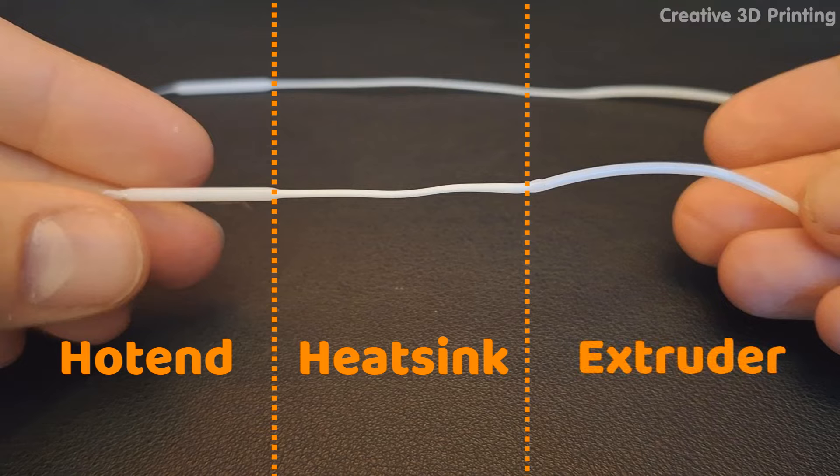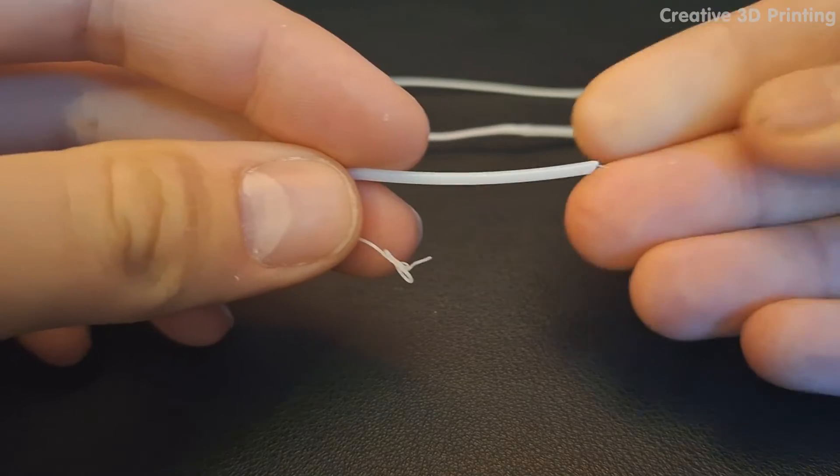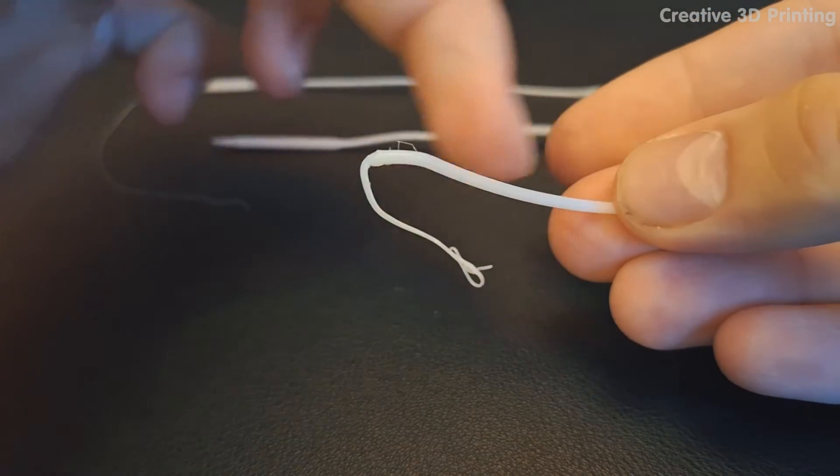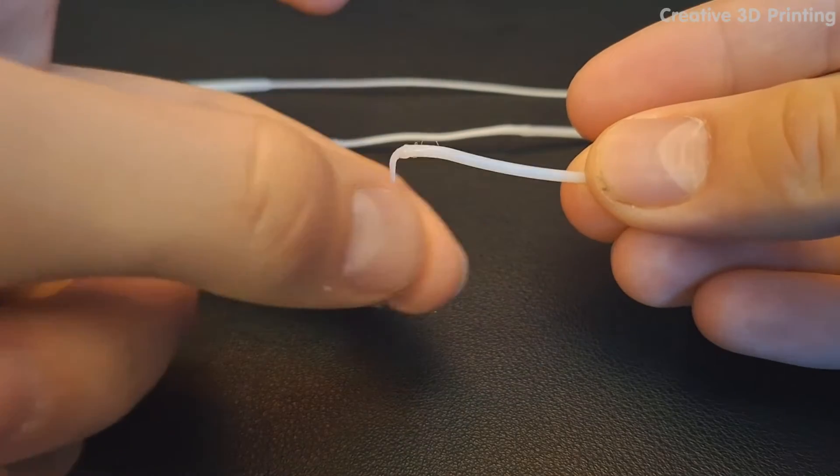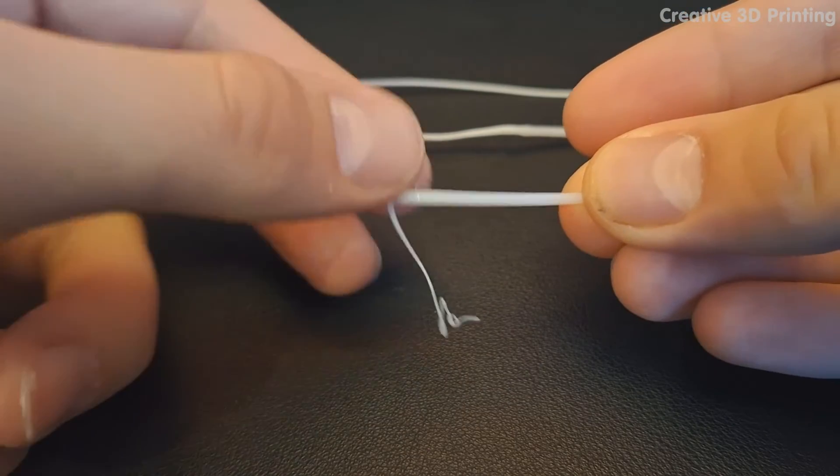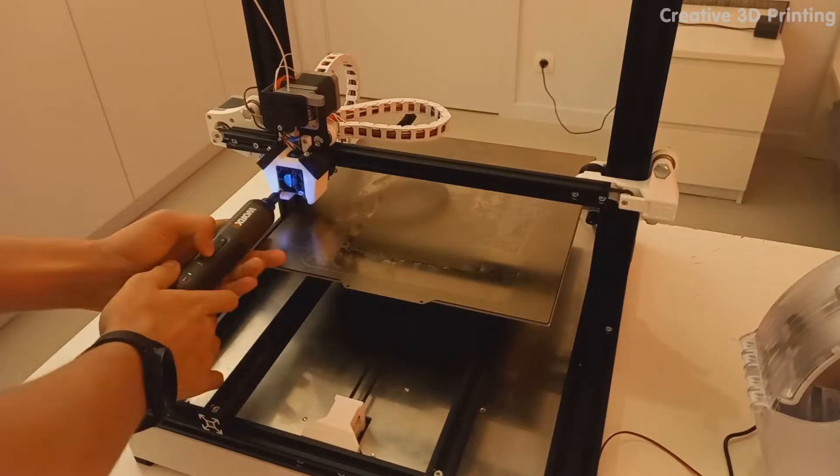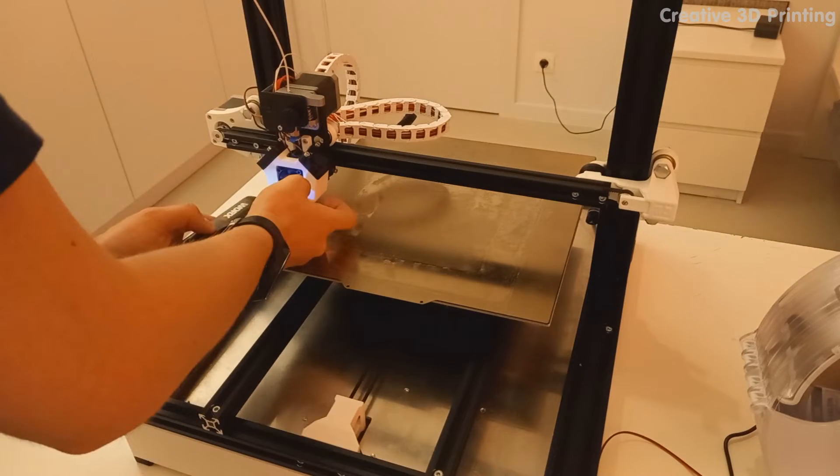The third part is the extruder, which is indeed not warm and has a perfect diameter. For comparison, here is a normal piece of filament that I pulled from the extruder. On the left it is deformed, which is normal, and on the right you can see that it has a perfect diameter because that is where it was in the heatsink and extruder.